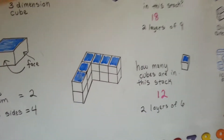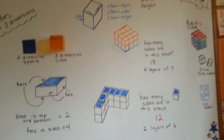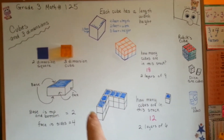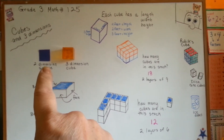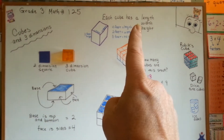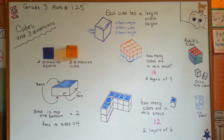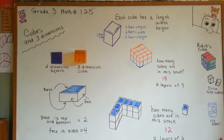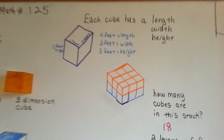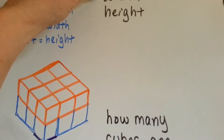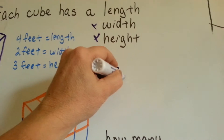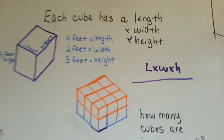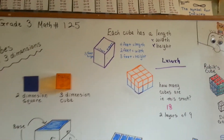That's our little introduction to cubes and 3D measurements. Remember that 2 dimensional flat ones have a length and a width, but a cube has a length, a width, and a height. To find the area of a cube, you multiply the length times the width times the height — it's L times W times H — and you should be able to get the area for a cube.